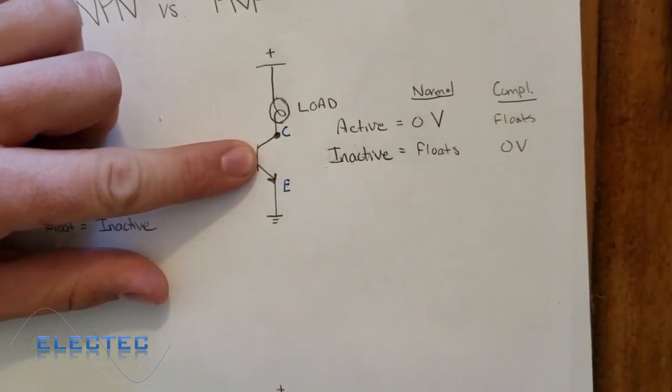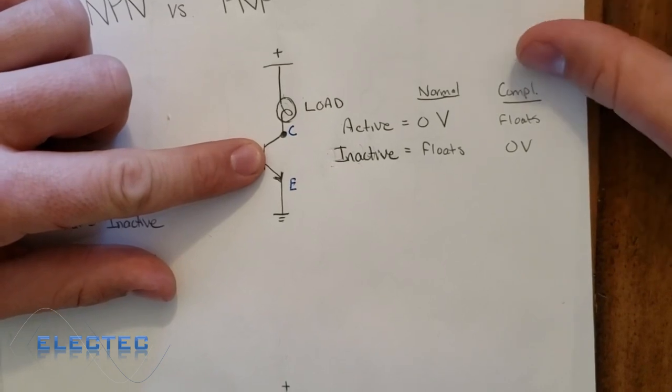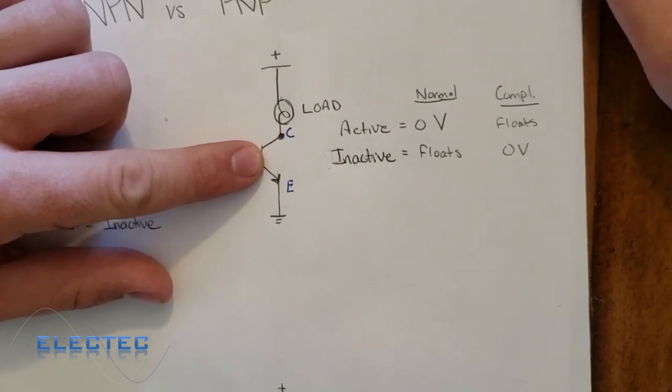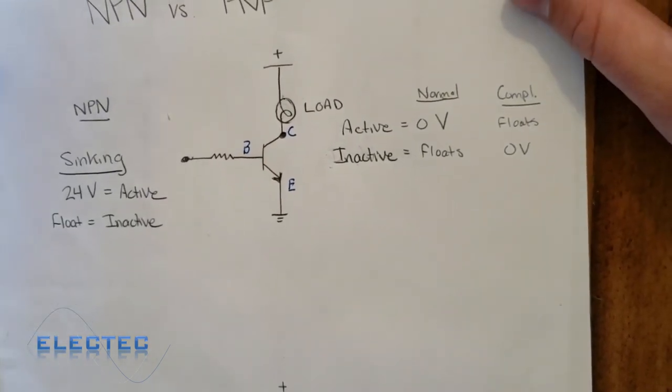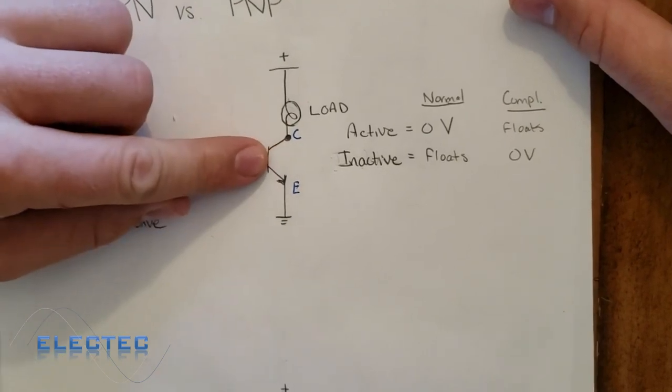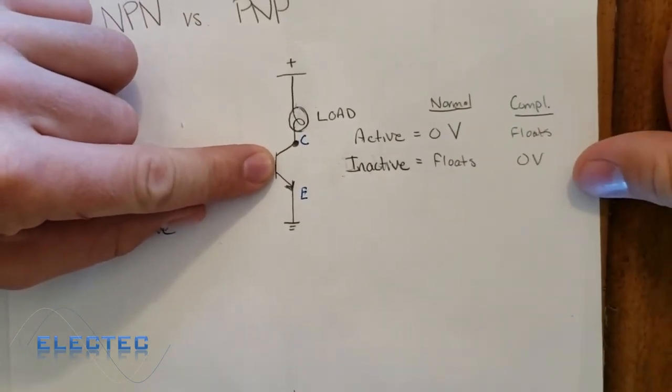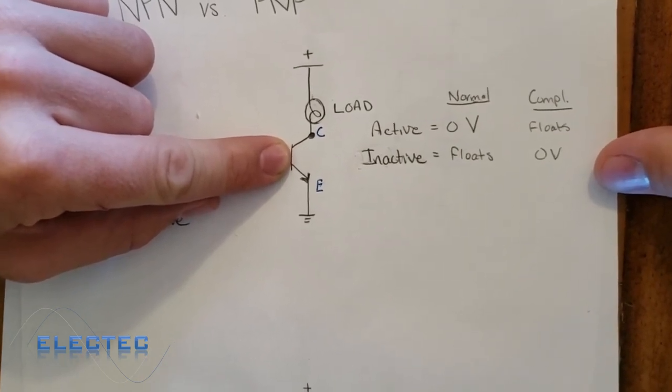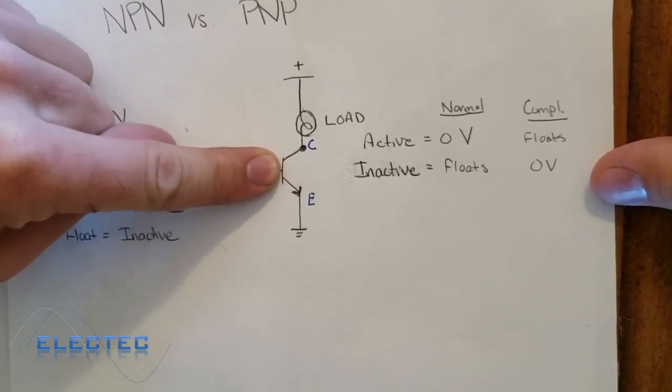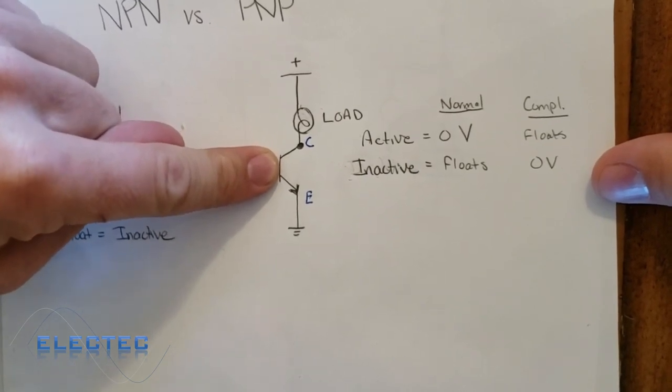The only thing the real electrician cares about is the load side because let's imagine inductive prox. On the input side, it's working with magnetic resonance and you put a piece of metal in front of it or something. So the base side is, it's got its own internal circuitry. All we really care about is the load side. So if we want this NPN sensor, which is a sinking sensor, as you remember,